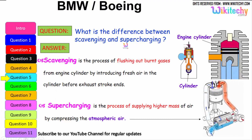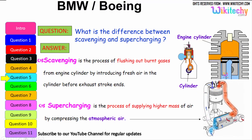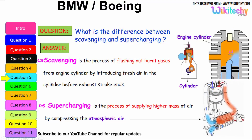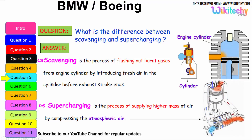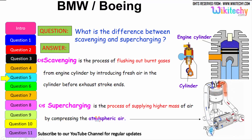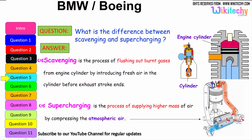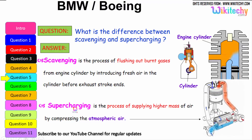What is the difference between scavenging and supercharging? Scavenging is the process of flushing out the burnt gases from the engine cylinder by introducing fresh air into the cylinder before the exhaust stroke ends. Supercharging is the process of supplying high-density masses of air by compressing it above atmospheric pressure — that is referred to as supercharging, where high-pressure air is injected into the cylinder.